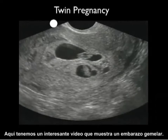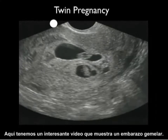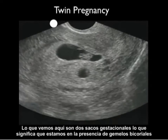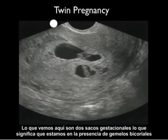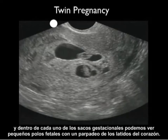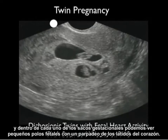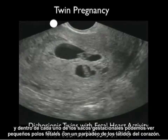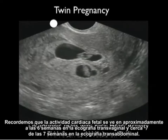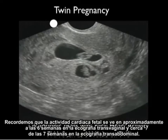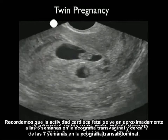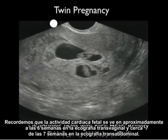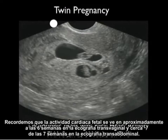Here's an interesting video clip showing a twin pregnancy. We see two gestational sacs signifying dichorionic twins, and within each gestational sac we can see little fetal poles with a flicker of heartbeats. Recall that fetal heart activity is seen at about 6 weeks on transvaginal sonography and about 7 weeks on transabdominal sonography.